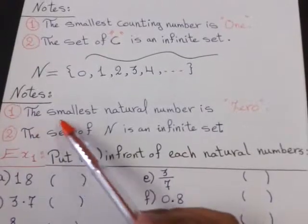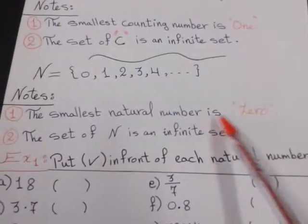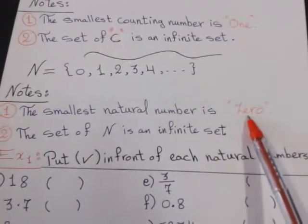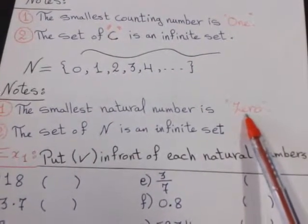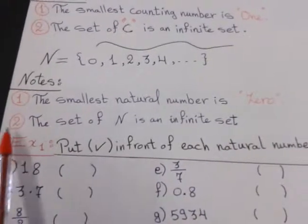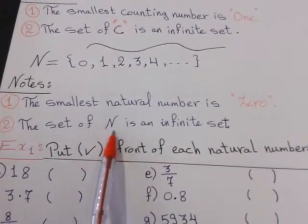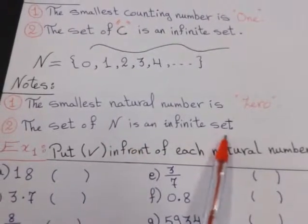The first one, the smallest natural number is 0. So, the smallest counting number is 1, but the smallest natural number is 0. Number 2, the set of natural numbers is an infinite set also.